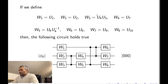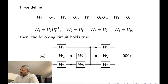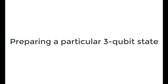We can verify that if we define W1 through W8 in terms of U1 through U10 as specified, then this circuit holds true and we have prepared this 3-qubit state. Note that by 'preparing' we mean working in the other direction, but circuits are reversible, so this circuit essentially is preparing this 3-qubit state.